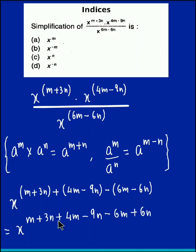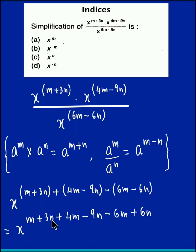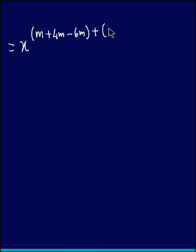So we obtain x raised to, let us collect all the m terms: m plus 4m minus 6m, plus all the n terms: 3n minus 9n plus 6n.